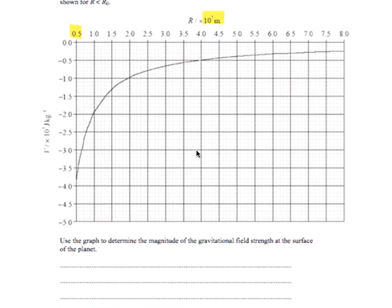The first part says to use the graph to determine the magnitude of the gravitational field strength at the surface of the planet. Now our first instinct, whenever we get one of these potential distance graphs, is to go with the fact that gravitational field strength is negative potential gradient. That would mean getting the slope, the change in potential with distance. But in this case,